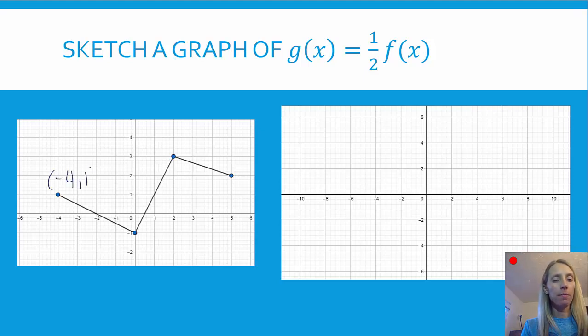So negative 4, 1 will now map to, in g will be negative 4, 1 half. That's going to be a little bit tricky. It's probably right about there. Then here, negative 1, 0, while cutting 0 in half is going to keep it at 0, so it would be negative 1, 0.